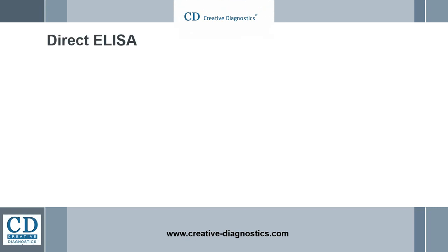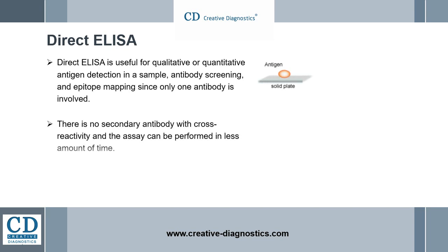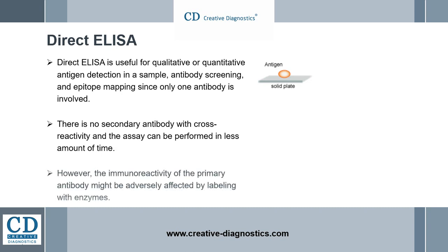Direct ELISA. This is the simplest form of ELISA. An antigen is attached passively to a plastic solid phase by a period of incubation. After a simple washing step, the antigen is detected by the addition of an antibody that is linked covalently to an enzyme. After incubation and washing, the test is developed by the addition of a chromogen or substrate, whereby enzyme activity produces a color change. Color development is read after a defined time, or after enzyme activity is stopped by chemical means at a defined time.